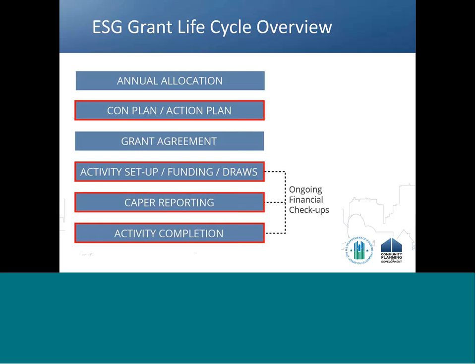The ESG award is an annual allocation with a 24-month expenditure deadline. For recipients, this means that they will be simultaneously overseeing more than one award at a time. This does not mean that recipients have to spend their entire award within 12 months or prior to receiving their next annual allocation. The timing of the action plan submission depends on both the recipient's program year as well as the timing of the annual allocation.